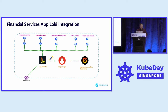In this demo, I'm using a financial services application with five different microservices: a backend service, an account service, an authentication service, a forex service, and a transaction service. All these services write logs to a collector, which is Loki — an open source project for log aggregation. I'm using OpenTelemetry Collector to write these logs to Prometheus, and Grafana to visualize the logs.